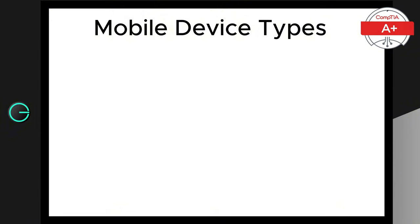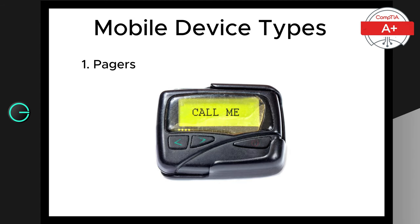Now let's explore the different types of mobile devices, both old and new. Let's start with pagers. These were among the earliest mobile communication devices. Pagers allowed users to receive short messages and were widely used in the 1980s and 1990s, especially by professionals like doctors. While they are mostly obsolete now, pagers were a crucial step in the evolution of mobile communication.